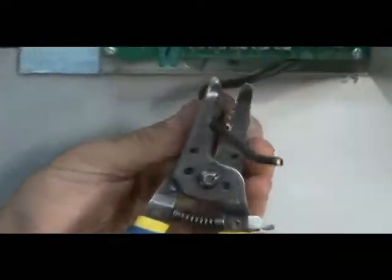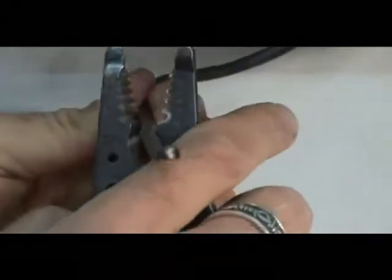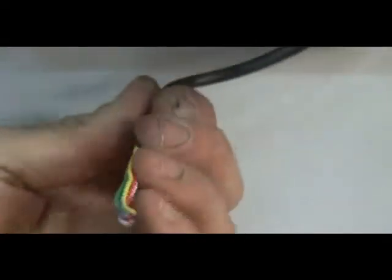Next, cut the thermostat wire to the desired length. Strip about 2 inches off the outer jacket from the end of the cable, being careful not to nick the individual wires.